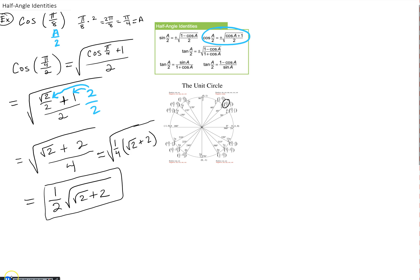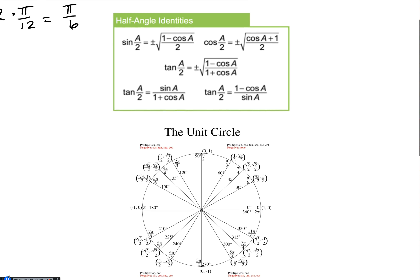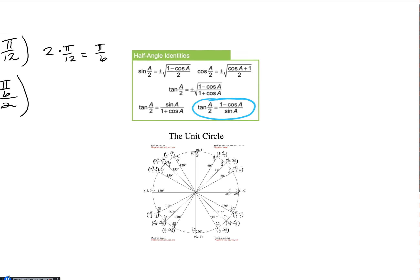In this last half-angle example, we look at the tangent of π/12. We've done sine and cosine, now let's do tangent. Multiplying π/12 by 2 gives 2π/12, which is π/6, so that's our a value. For tangent there are three different half-angle identity choices. I'm going to go with the one that doesn't involve square roots — that one looks a lot cleaner.